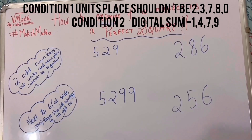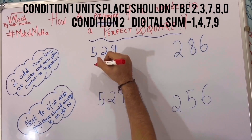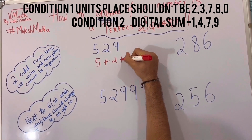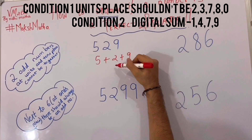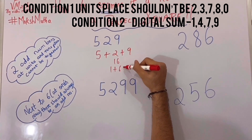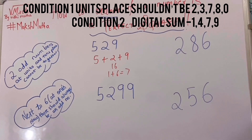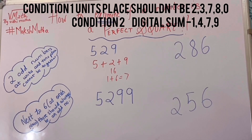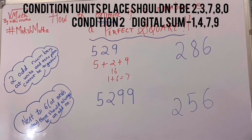Let's take the digital sum of 529. 5 plus 2 plus 9: 5 plus 2 is 7, 7 plus 9 is 16, again 1 plus 6 is equal to 7. So the digital sum is 7. It means it is a perfect square number, being the square of 23.